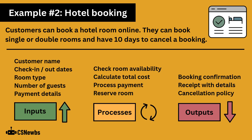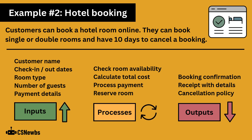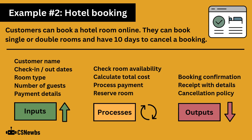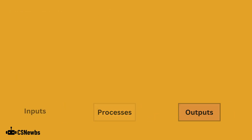Inputs include the customer's name, check-in and check-out dates, and room type. Processes include checking room availability and calculating the total cost. And for outputs, things like booking confirmation and a receipt with details.